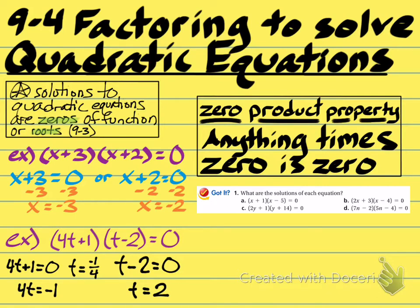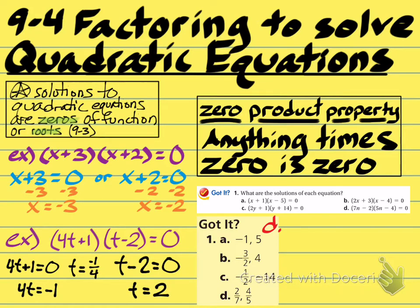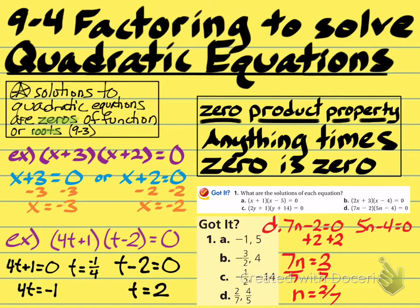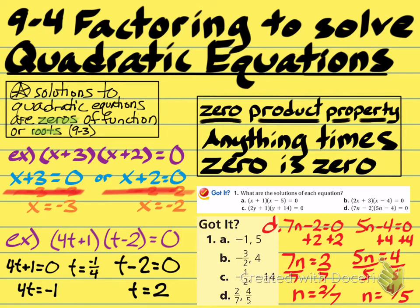Here are four more practice problems. Pause the video and try to work those out. I will also work out problem D. For D: set 7n minus 2 equal to zero and 5n minus 4 equal to zero. Add 2 to both sides to get 7n equals 2, then divide by 7 to get n equals two-sevenths. Add 4 to both sides to get 5n equals 4, then divide by 5 to get four-fifths. The main idea is that you are trying to set things equal to zero and figure out what values make the individual binomials become zero.